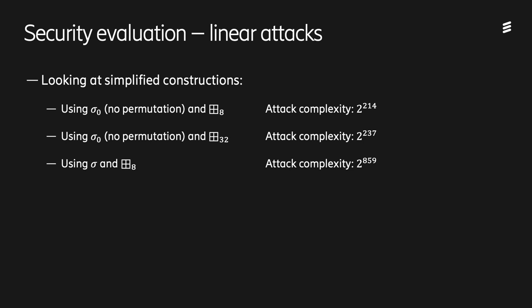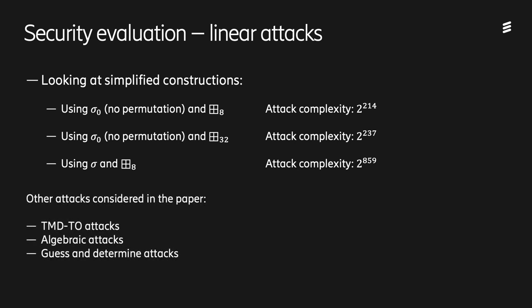Next, we look at linearization attacks. This is very hard to perform on the full cipher, but we have looked at different simplified constructions to get some indications. If we remove the byte permutation sigma — denoted sigma-0 here — and reduce the 32-bit addition with carry to only 8-bit addition with carry, we can perform a distinguishing attack with complexity 2^214. Using sigma-0 but the full 32-bit addition, we get the complexity up to 2^237. If we use the actual proposed sigma permutation and an 8-bit addition, the best linearization we could find gives an attack complexity of around 2^859. In the paper, we also look at time-memory-data trade-off attacks, algebraic attacks, and guess-and-determine attacks, but none of those attacks seems applicable to SNOW-V.